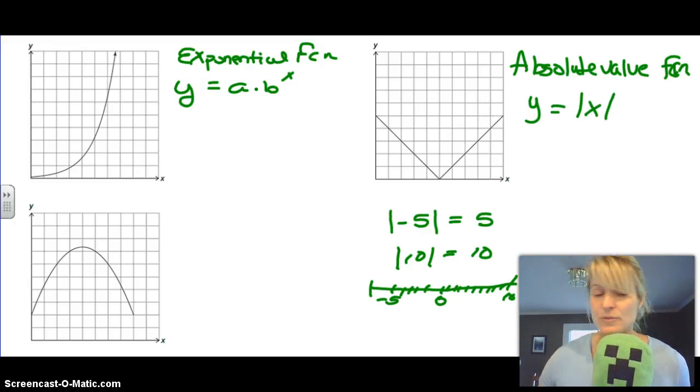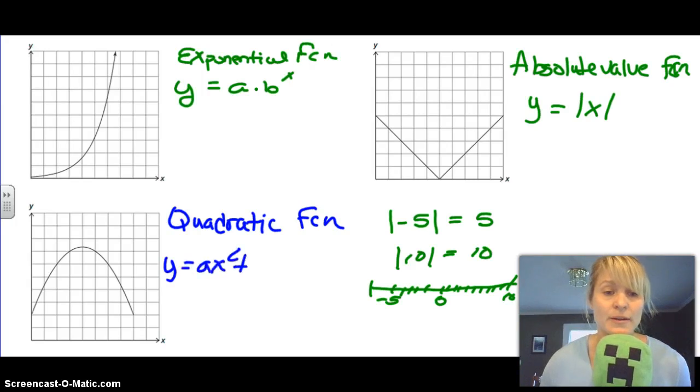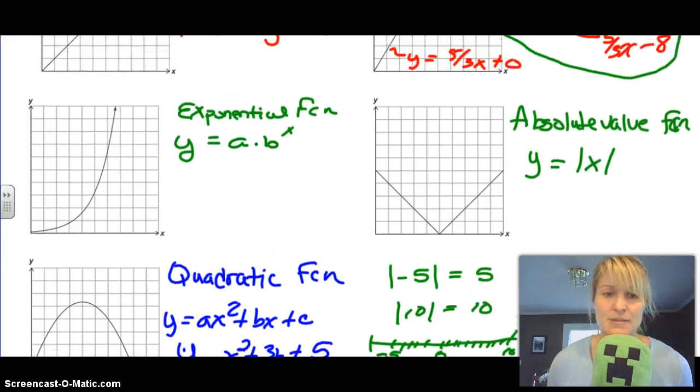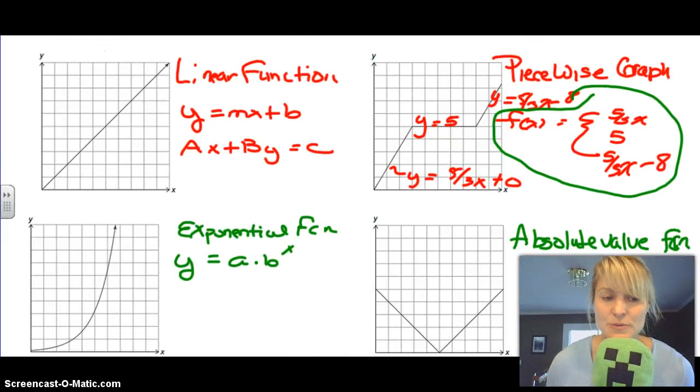And the last one we've identified a few times in class - this is the parabola. But it's called a quadratic function, and we're going to get really familiar with this later on. The equation for a quadratic function is ax squared plus bx plus c. Now, I'm not going to focus too much on these equations. I want you to be able to recognize them. If you see something in this type of form, like if you saw something that said x squared plus 3x plus 5, you should recognize that's quadratic and it will make a parabola. Make sure you have a couple of good notes on these five function families.